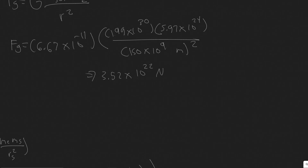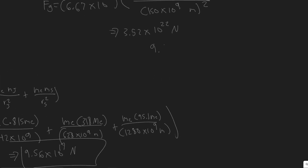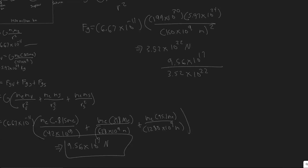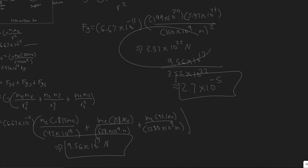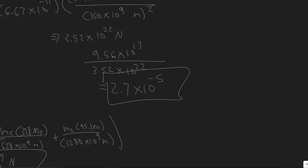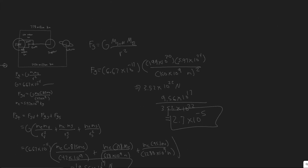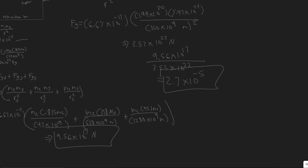When you calculate the Sun's force on Earth you get 3.52 × 10²² Newtons. Dividing the planets' combined force by the Sun's force: (9.56 × 10¹⁷) / (3.52 × 10²²) = 2.7 × 10⁻⁵. This shows the combined gravitational force of the three planets is only about 27 millionths of the Sun's force on Earth — not even close. These are your final answers.